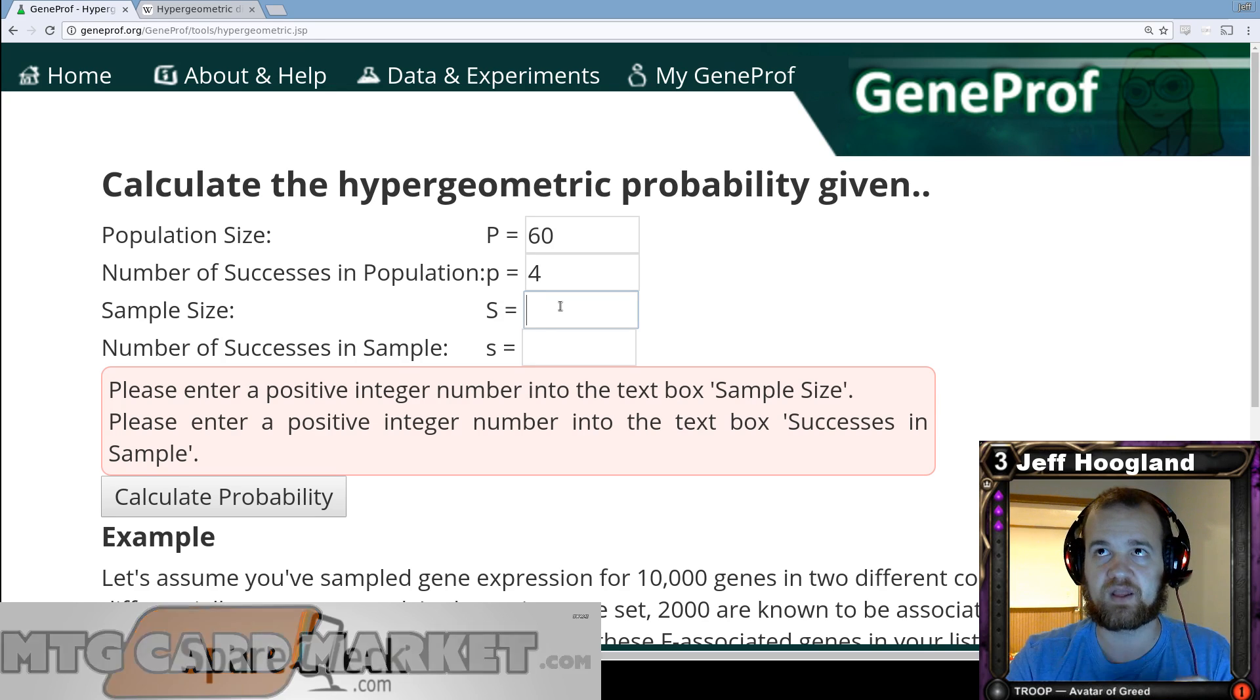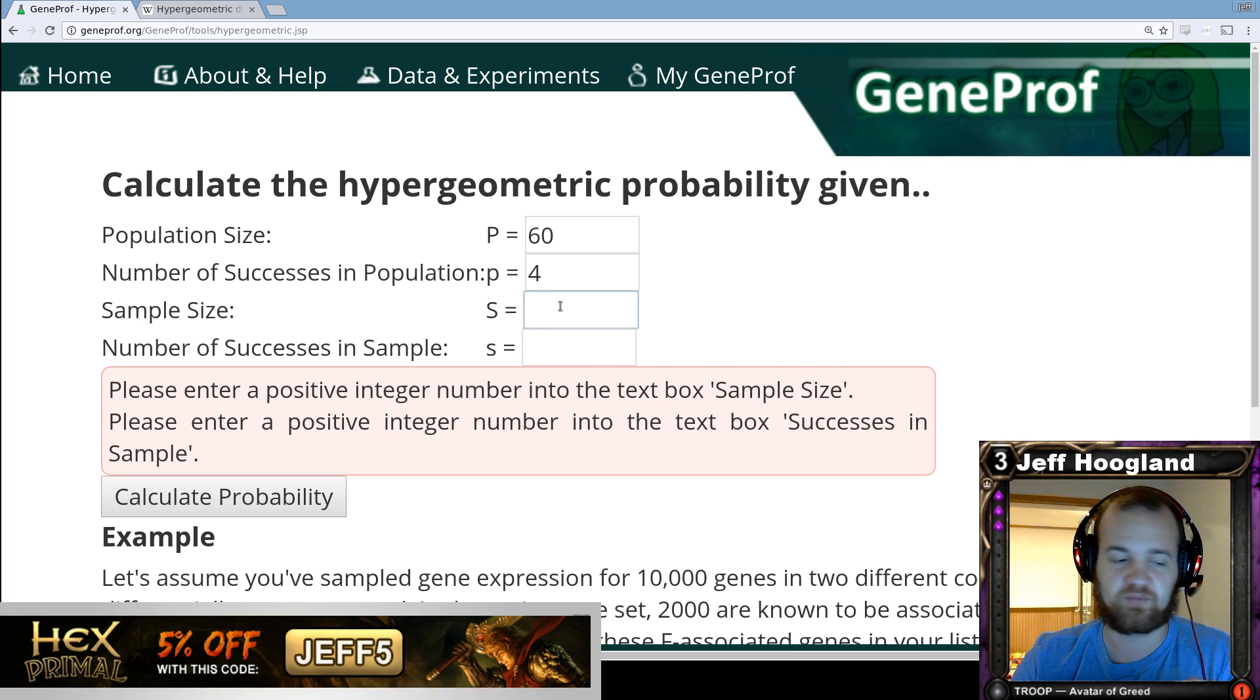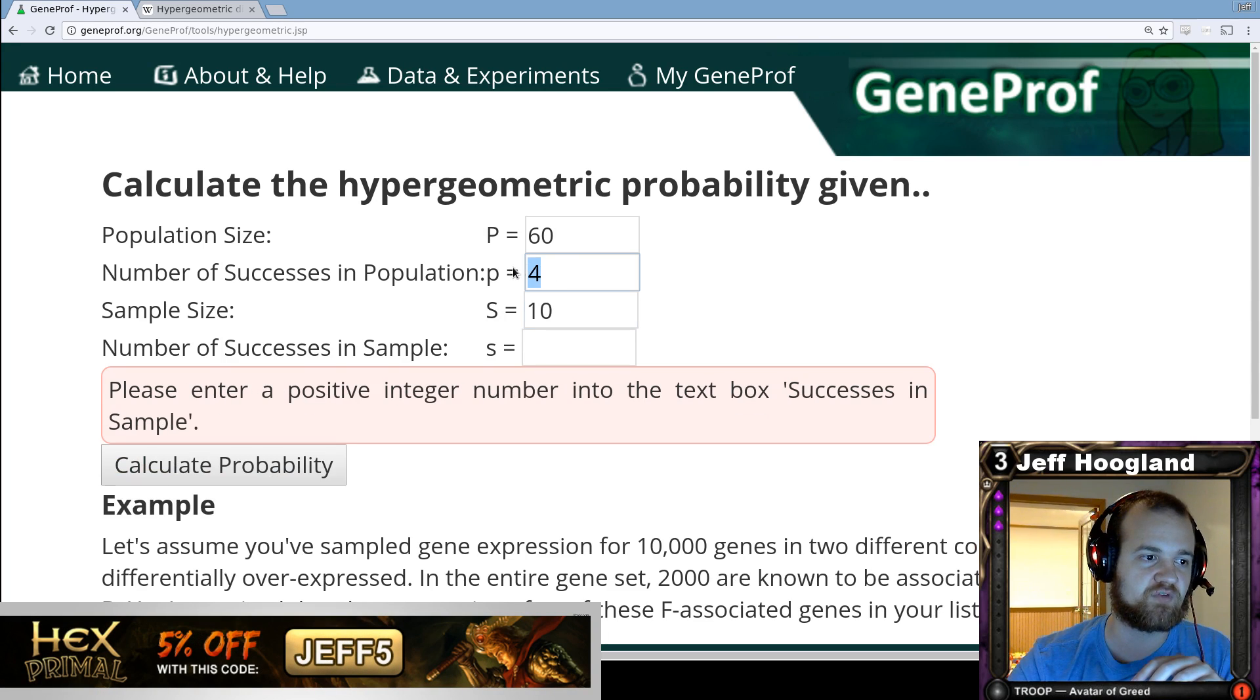Well, if we're on the play, we have seven cards in our starting hand and we've drawn a card on our second, third, and fourth turn. So that means we've seen ten cards out of our deck by the fourth turn. So that means we want to know what are the odds of drawing one of our four copies in the first ten cards that we draw out of our deck.